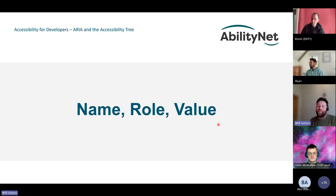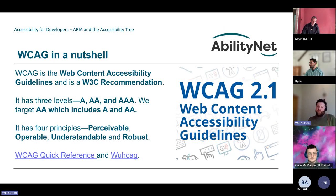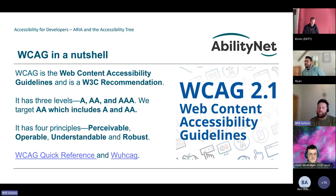Now we're going to talk about name, role, and value. Understanding when to use ARIA requires understanding these — name, role, and value is one of the key WCAG guidelines. WCAG — the Web Content Accessibility Guidelines — is a recommendation created by W3C, sitting alongside the HTML and CSS spec, and is the standard for creating accessible content. There are three levels: A, AA, and AAA, structured like a pyramid where everything in A is in AA, and everything in AA is in AAA. We're currently on WCAG 2.2.